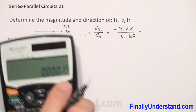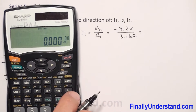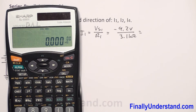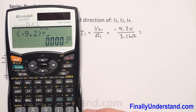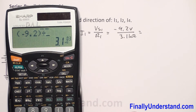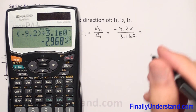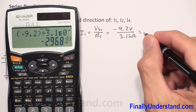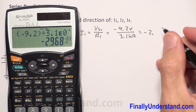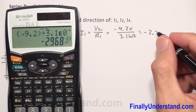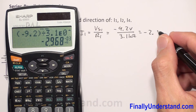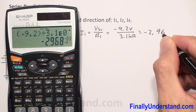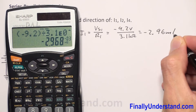Now I'm going to use the calculator like always, and I have negative 9.2 divided by 3.1 times 10 to the 3. This is equal to negative 2.96 milliamps.